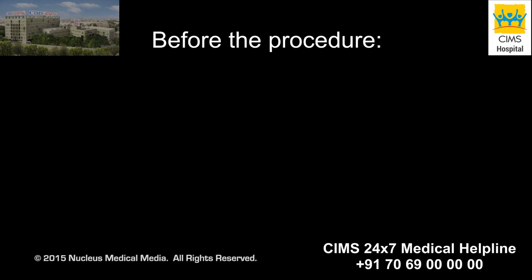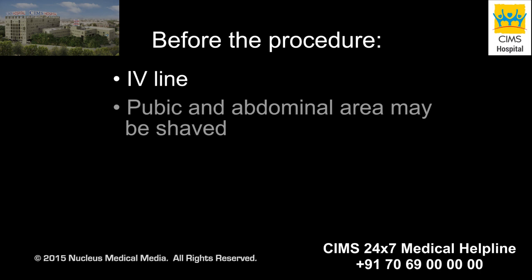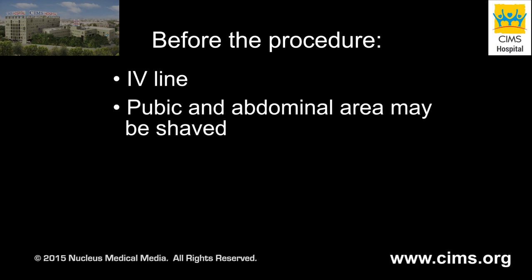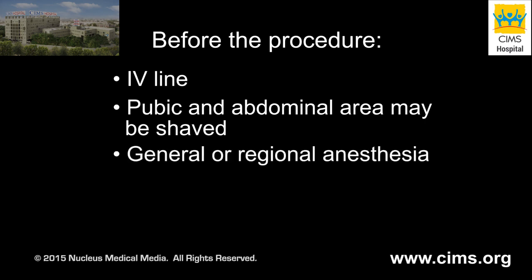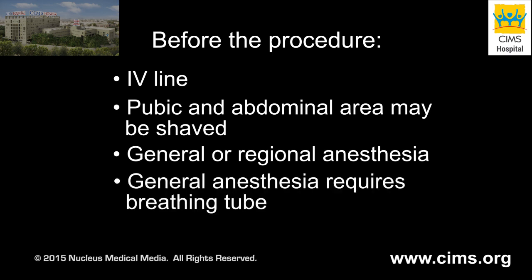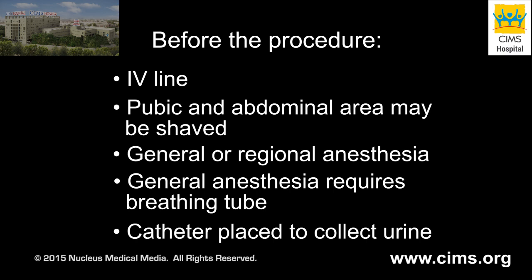When you arrive at the hospital for your surgery, an intravenous line will be started. If you are having an abdominal hysterectomy, your pubic and abdominal area may be shaved. Hysterectomies may be done under general or regional anesthesia. If you are receiving general anesthesia, you will be asleep for the duration of the procedure and a breathing tube will be temporarily inserted through your mouth and into your throat to help you breathe during the operation. A catheter will be placed into your bladder to drain your urine during surgery.